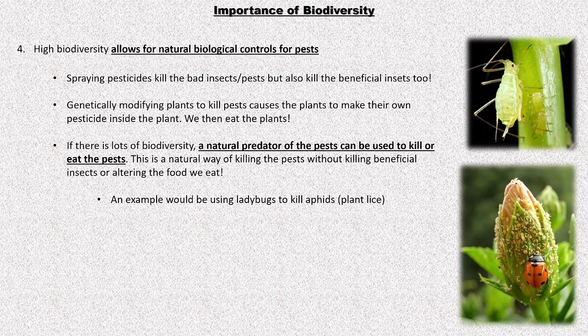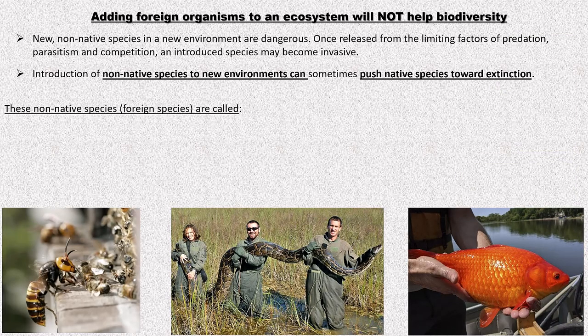If you have a lot of biodiversity, this gives you a third option: using a natural predator to kill or eat the pests. This is a natural way — no chemicals sprayed, no harm to humans, no harm to beneficial insects. It's the best of the three. For example, aphids love to eat your plants — instead of spraying or genetically modifying, use a ladybug. Ladybugs love to eat aphids. It's important to note that adding foreign organisms to an ecosystem doesn't help biodiversity — it actually hurts it.